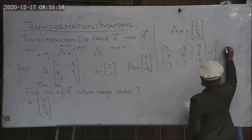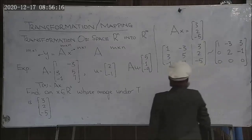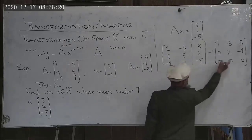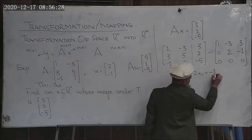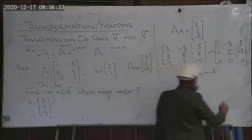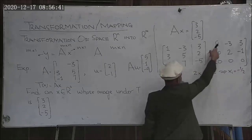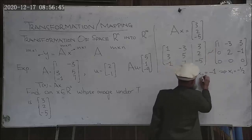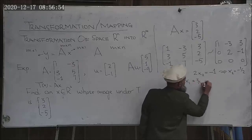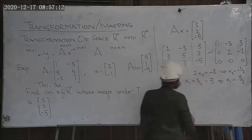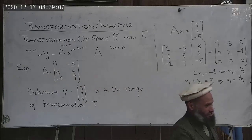After performing the row operations, we arrive at the echelon form. From this, 2x₁ = −1, giving x₁ = −1/2. From the first row, x₁ + 3/2 = 3. Thus, the vector x is determined. We can also determine if this vector is in the range of that particular transformation.